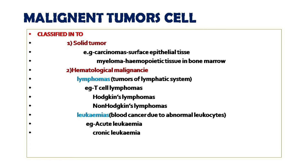The second type is hematological malignancy, which is classified into two types: lymphomas and leukemias. In lymphomas, tumors develop in the lymphatic system. Examples include T-cell lymphoma, Hodgkin's lymphoma, and non-Hodgkin's lymphoma. In leukemia, tumors are not formed, but due to an enormous number of abnormal white blood cells in the blood, cancer occurs without the formation of tumors.